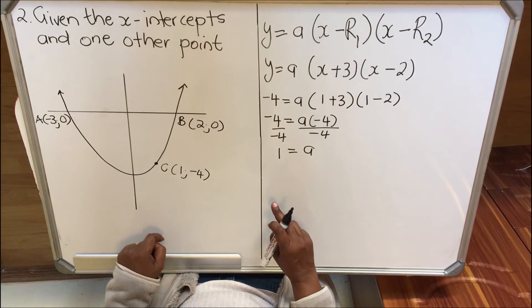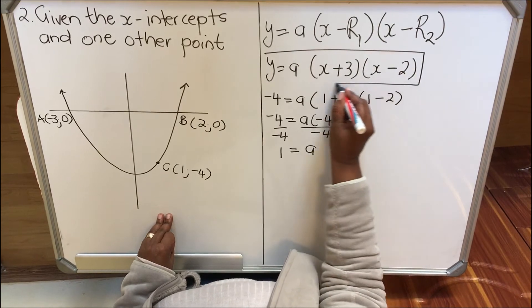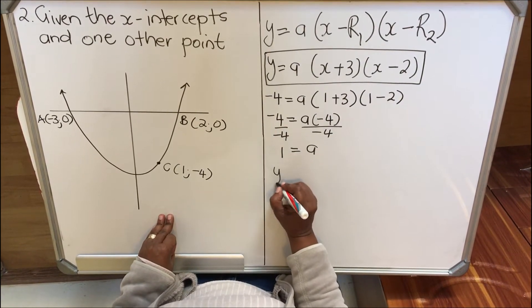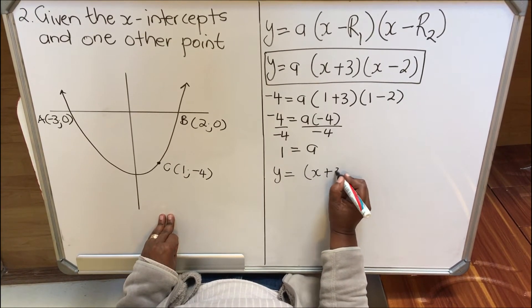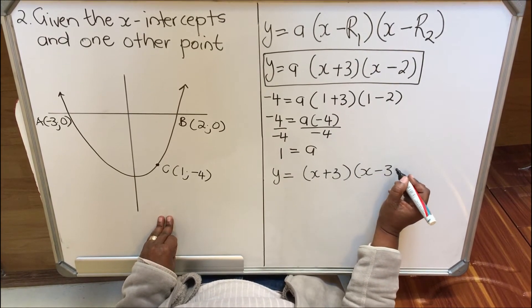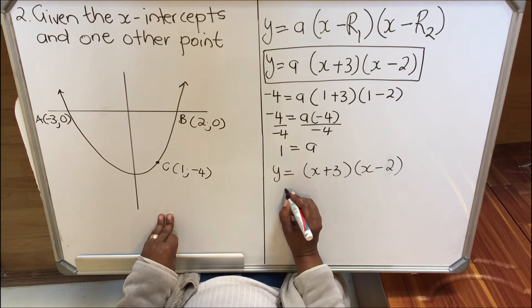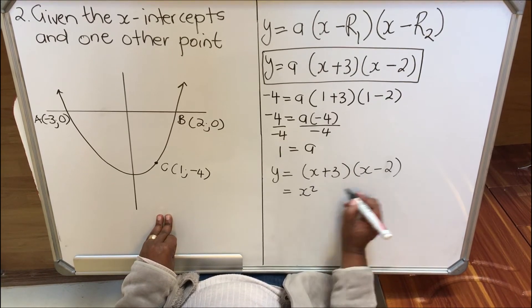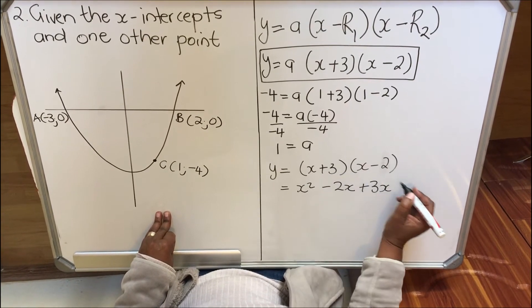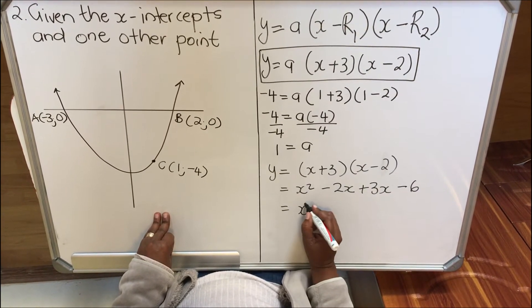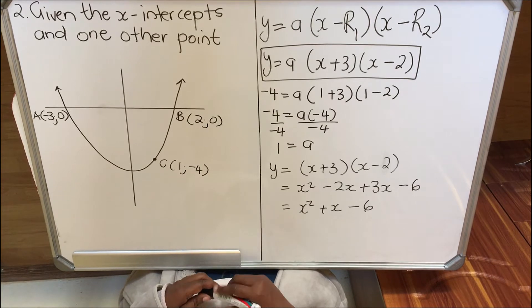a is positive, meaning the parabola faces up, so that's correct. Substituting a = 1: y = (x + 3)(x - 2). Multiplying out the bracket: x times x is x², x times -2 is -2x, 3 times x is +3x, 3 times -2 is -6. So in standard form: y = x² + x - 6.